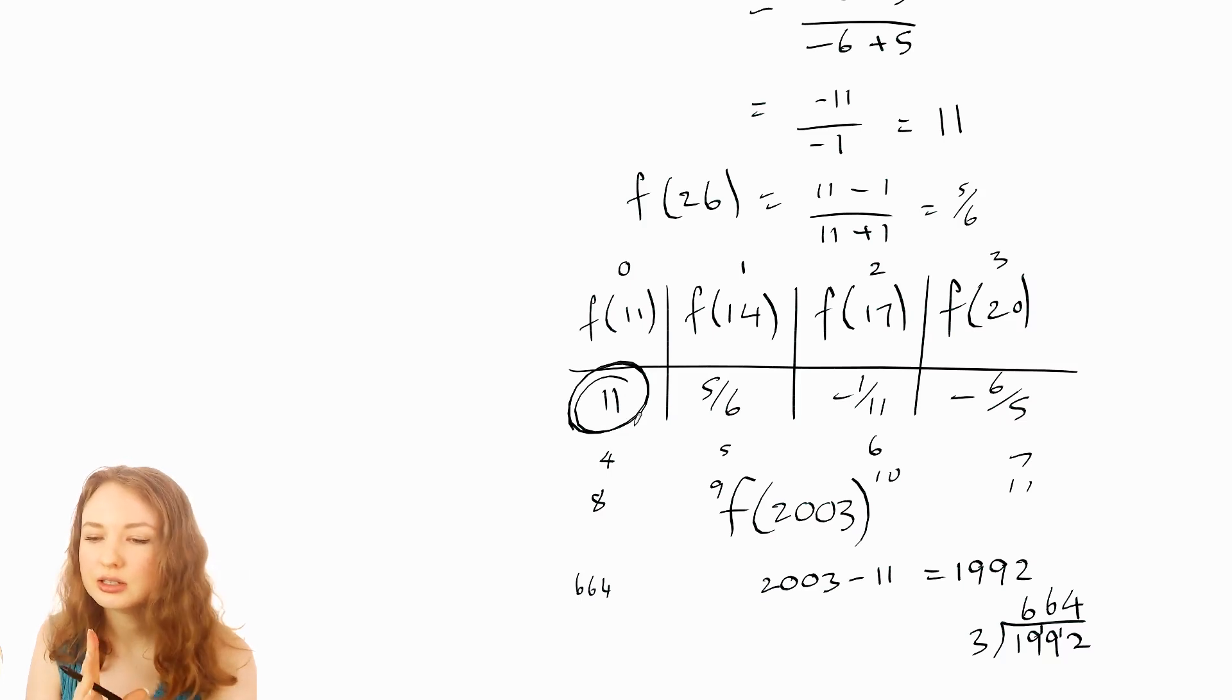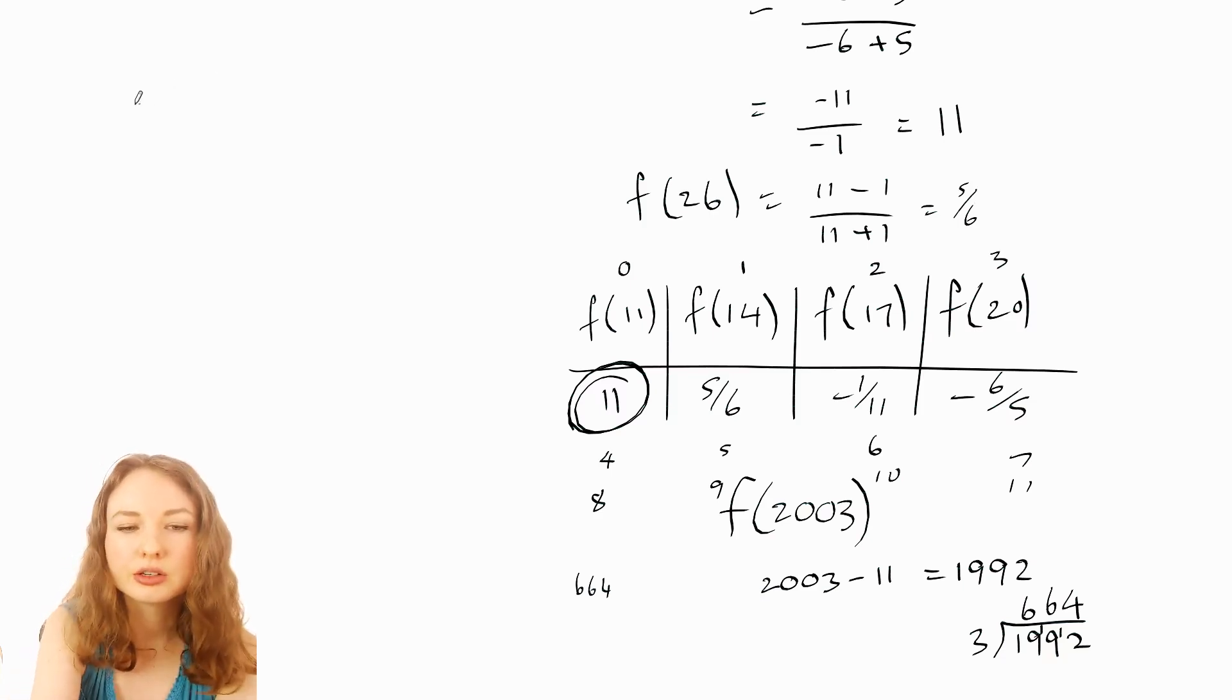Now just to test that out, what I would do is kind of like repeat this process with another number just to check, because it's easy to sort of get off by one. So I might pick like the f of 26. We already know what that is, but I can do exactly the same process that I did here, just to check that that process is correct.